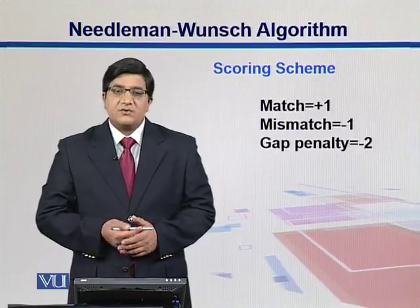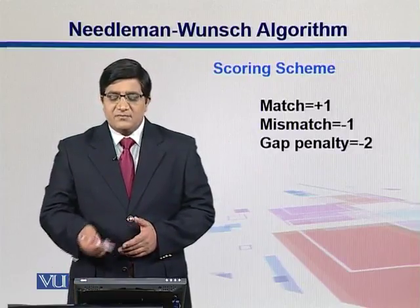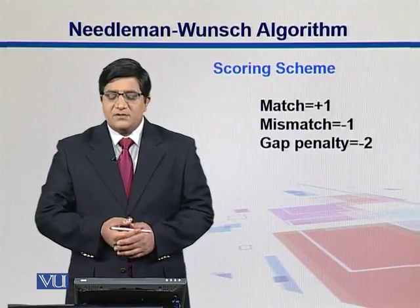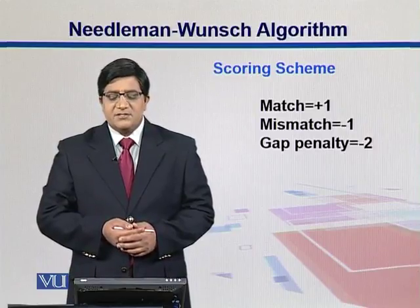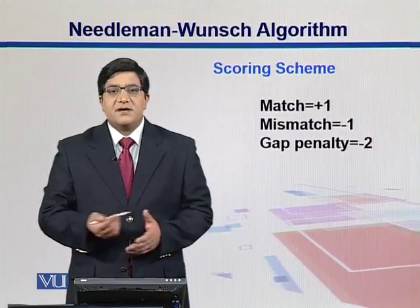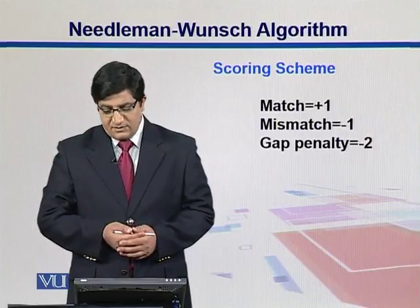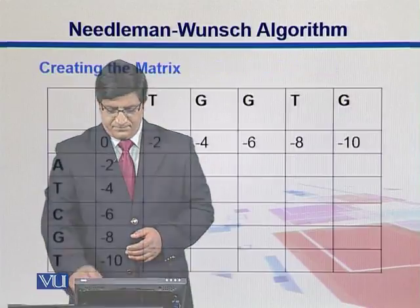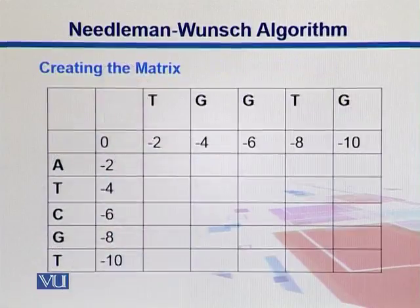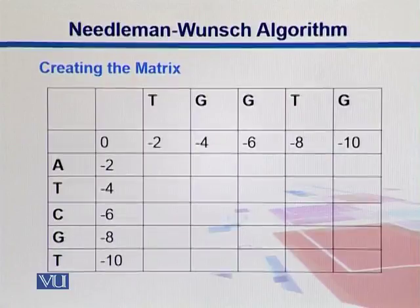This is our scoring scheme for this example. We take a match as plus 1, a mismatch as minus 1, and a gap penalty as minus 2. First we create the matrix — a two-dimensional matrix.